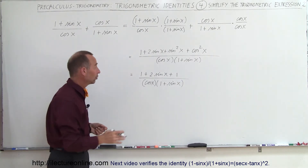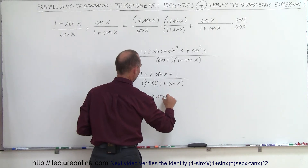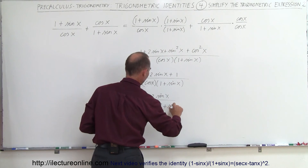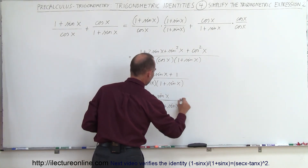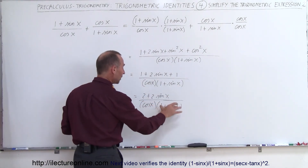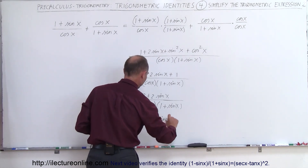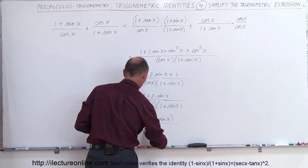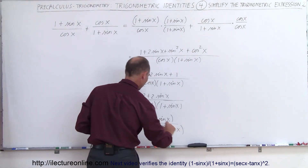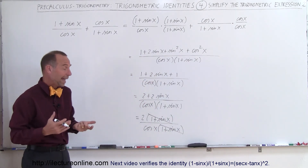Now we can combine the two constants: 1 + 1 = 2, so this is equal to (2 + 2sin x) / (cos x · (1 + sin x)). If you factor out a 2 in the numerator, we get 2(1 + sin x) / (cos x · (1 + sin x)), and the (1 + sin x) cancels out, leaving 2 / cos x.